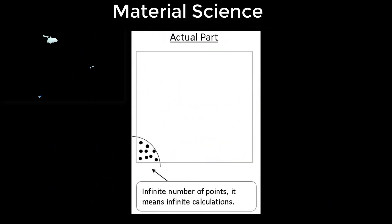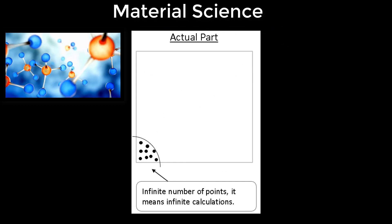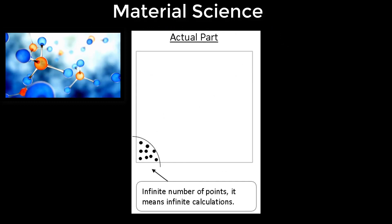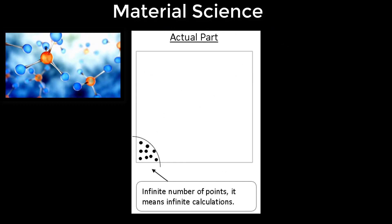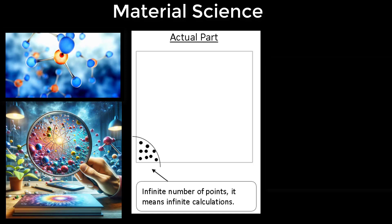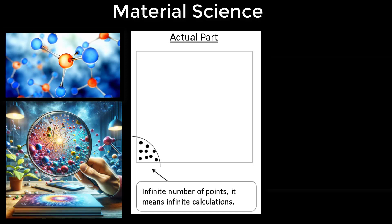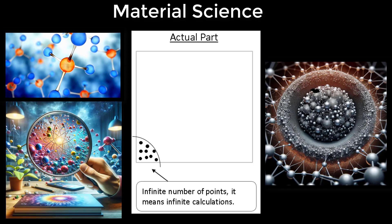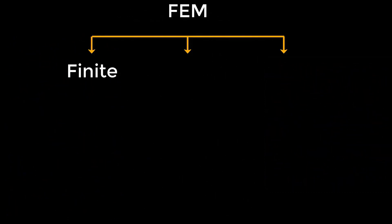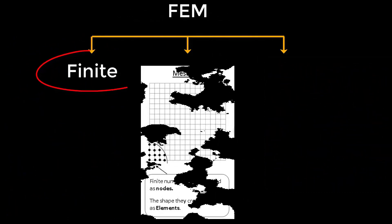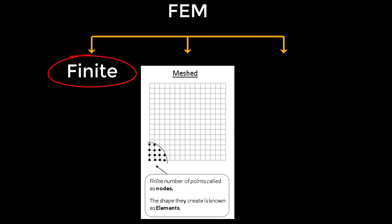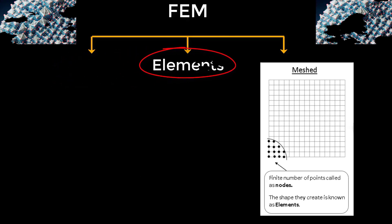As per material science, every object — no matter how solid and continuous it appears — is made up of a vast number of tiny atoms and molecules. Trying to analyze something on this atomic level is overwhelmingly complex. FEM simplifies the problem by breaking the object down from a near-infinite to a finite number of manageable pieces or elements. Think of it as dividing a complex shape into smaller, easier-to-understand parts.